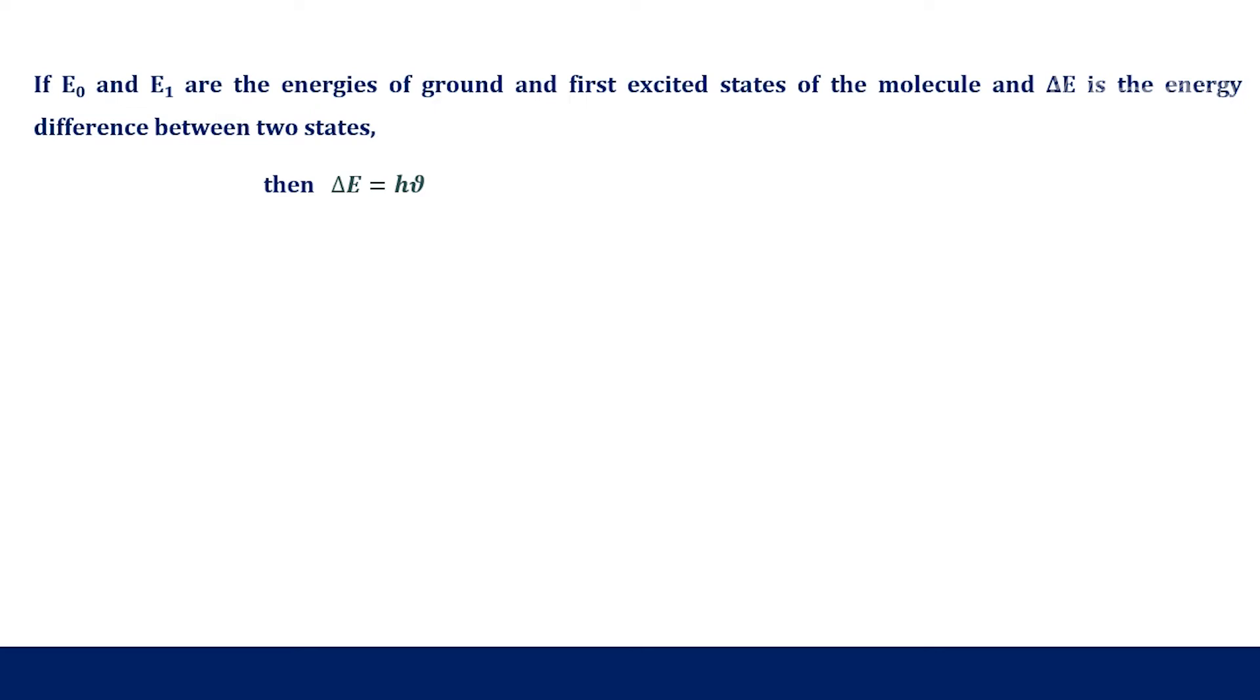The greater the number of molecules capable of absorbing light of a given wavelength, greater is the extent of light absorption. If E0 and E1 are the energies of ground and first excited states of the molecule, and delta E is the energy difference between two states, then delta E equals H into nu. Under this condition, the electron will be promoted from lower energy electronic level to higher energy electronic level. It means the absorption of energy takes place in this condition.